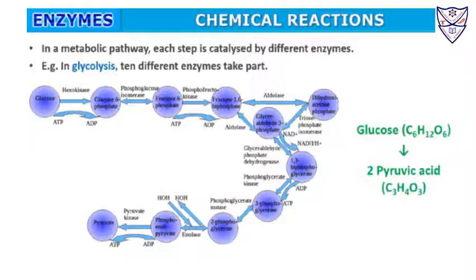If we take a metabolic pathway, then at each step we will have a different enzyme. In glycolysis, for example, there are 10 different enzymes involved — like hexokinase, phosphofructokinase, and aldolase. Eventually in glycolysis we get pyruvic acid from glucose, but each enzyme is different because its substrate is different.